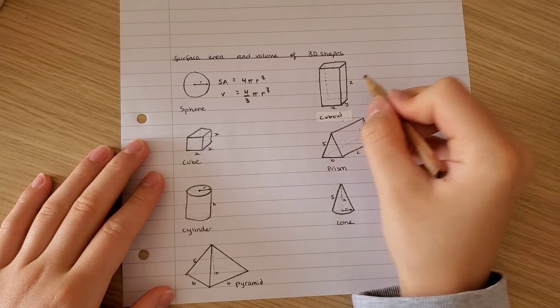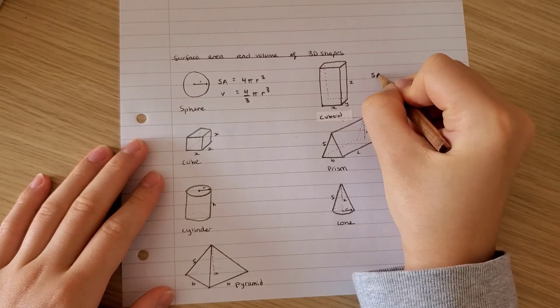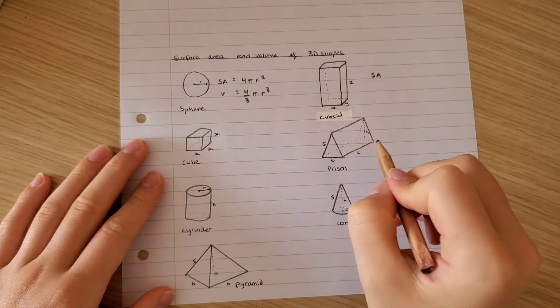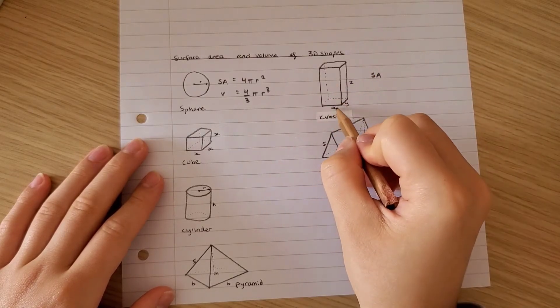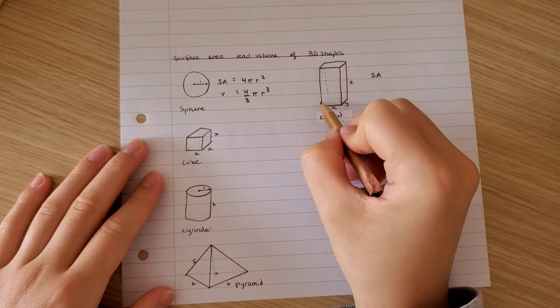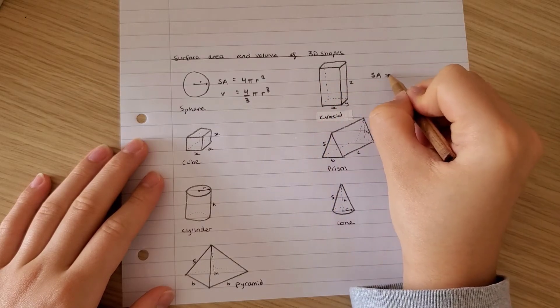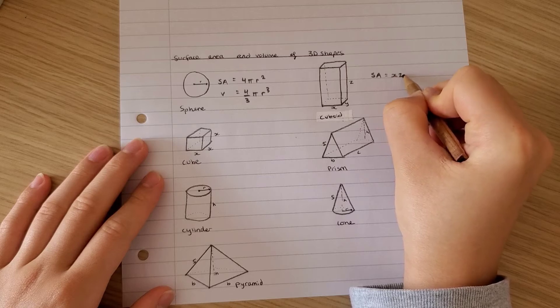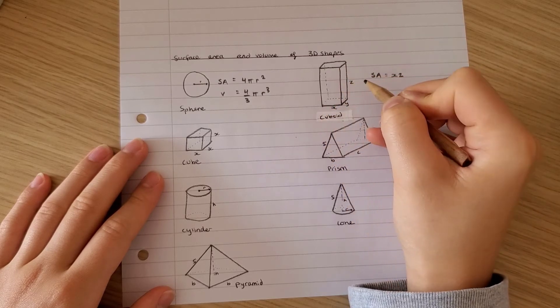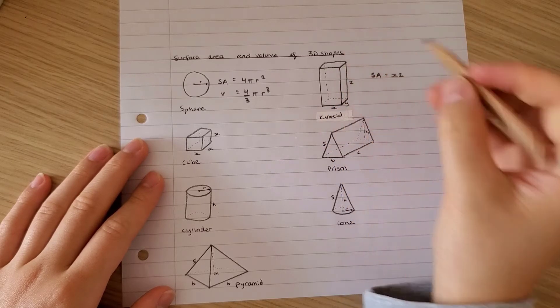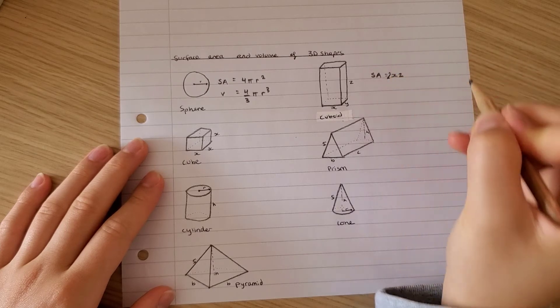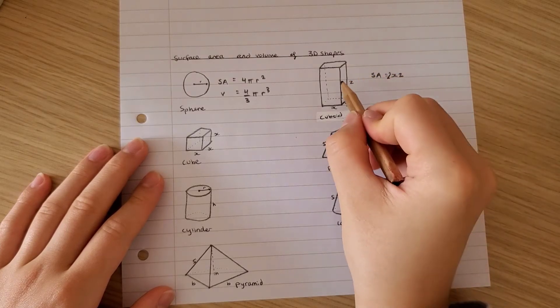For a cuboid, the surface area takes into account all the sides. So you have x times z for this face, and you have that 1 2 times, so you can add a 2. Now if you take into account the sides,